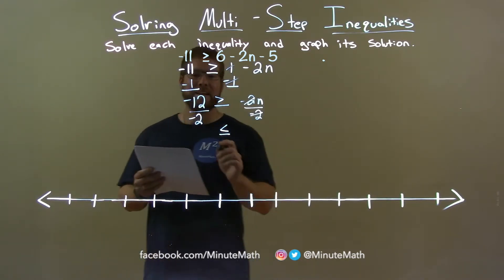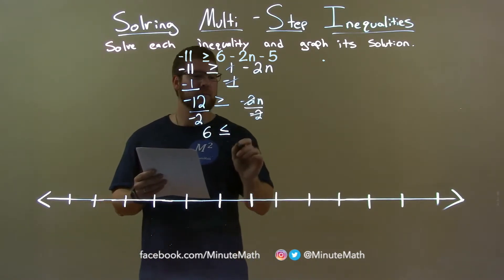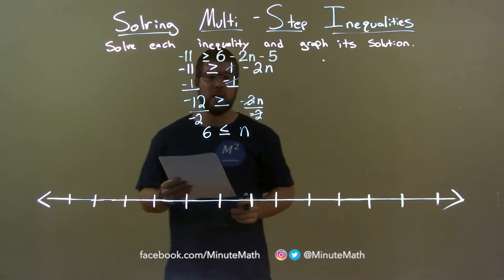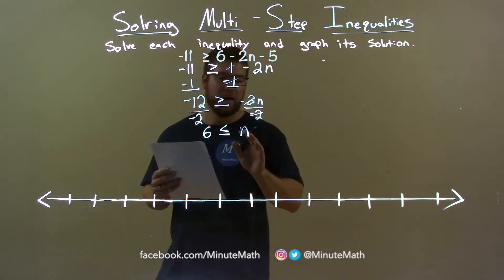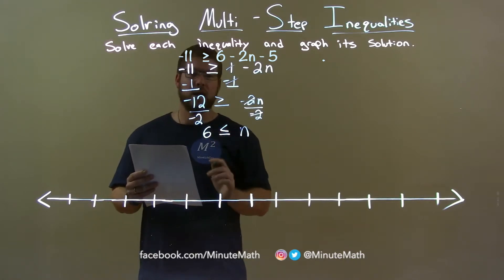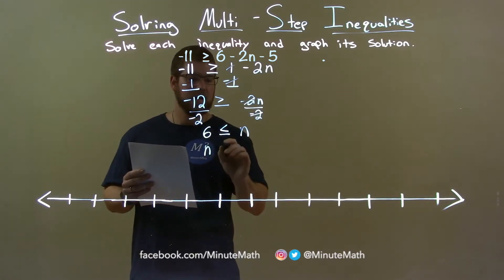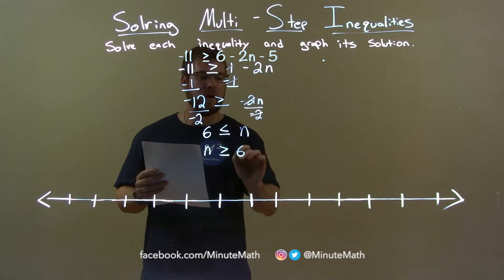Negative 12 divided by negative 2 is a positive 6. And n is by itself on the right. We can rewrite this to have n come first. So, 6 is less than or equal to n, same thing as n is greater than or equal to positive 6.